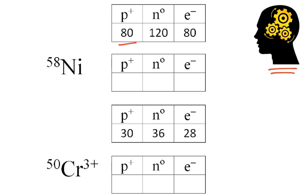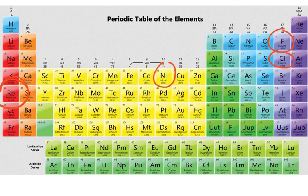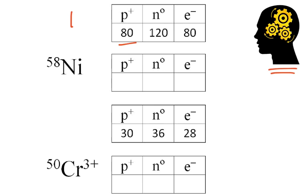First one, we have 80 protons. That's the key thing. So I look up here, 80, that is Mercury. So we know our symbol is Hg. And if it has 120 neutrons, we're going to add those together. I didn't write my 80. There's 80. 200 total. So the mass would be 200. And because the electrons match the protons, I know that there is no charge on this isotope, so we're done.